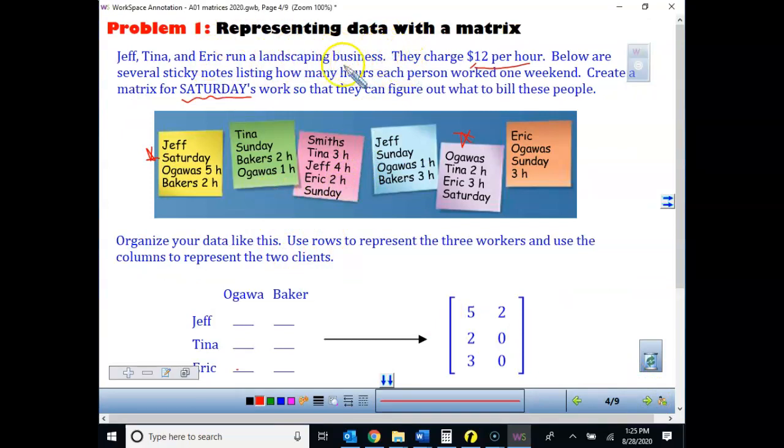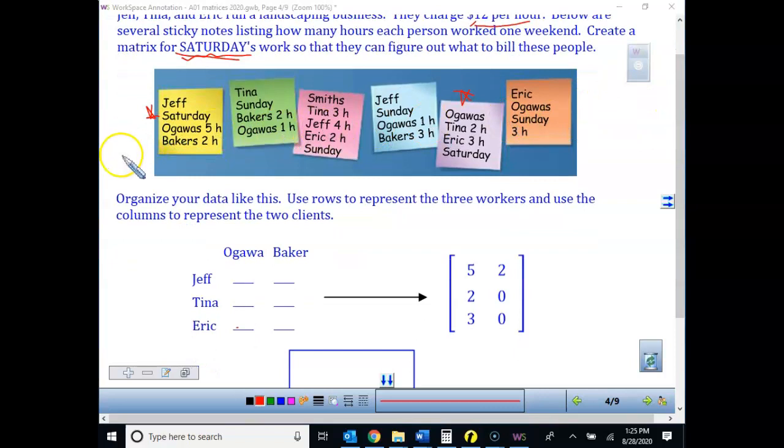So how could we use a matrix to represent some data? So we know these 3 people run a landscaping business, they charge $12 per hour, and we can see down below that these are the people where they've worked and who they worked for. So one of the things that we might be looking at is creating a matrix only for our Saturday workers, and who have worked on Saturday, and so that we can bill the families. So if we're going to organize it, we're going to use rows, those are our people, representing our 3 workers that worked on Saturday. So I look through all of these, and some of them are Sunday, these are the 2 that I'm going to be looking at, this 1st one and this 4th one. And I'm going to put the 2 clients that they work for, Ogawa and Baker.